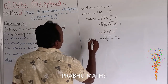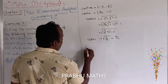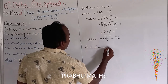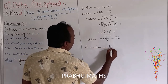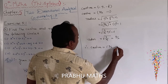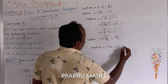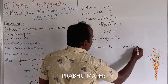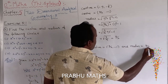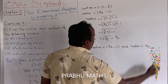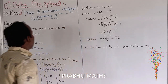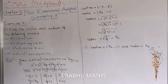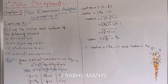Therefore, the center is (3 by 2, minus 1) and the radius is 3 by 2. That is the complete answer. The 11th sum with all subdivisions is completed.